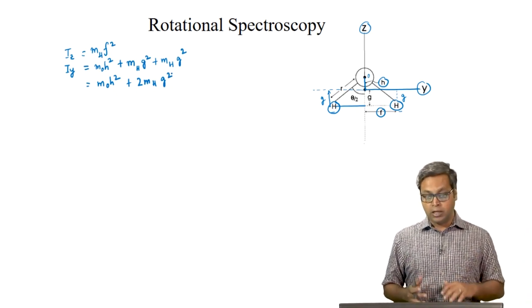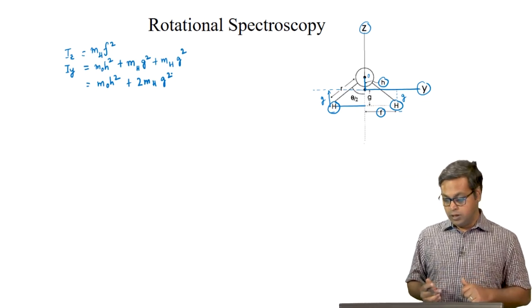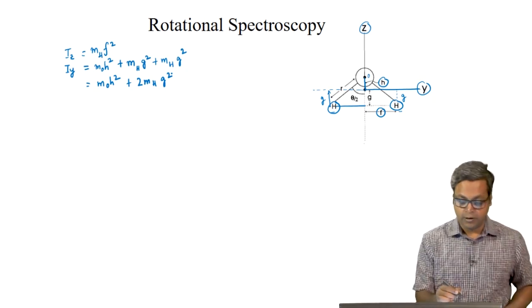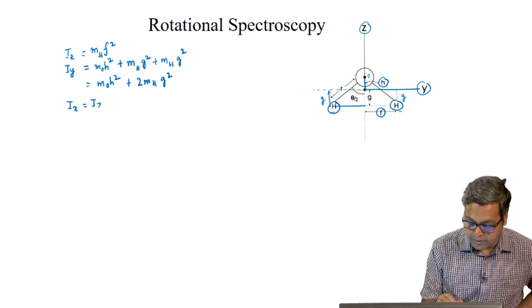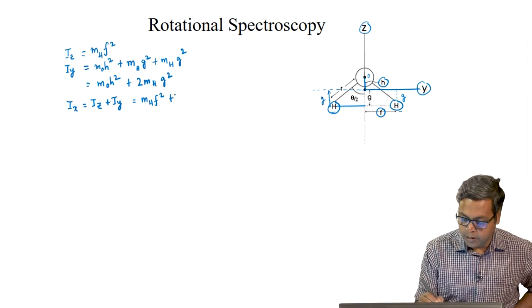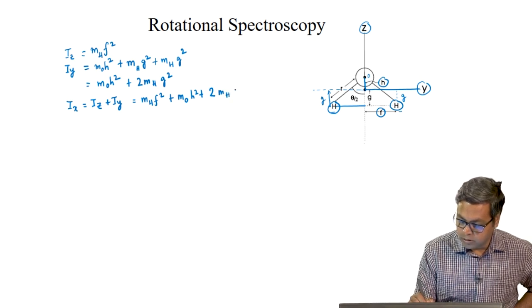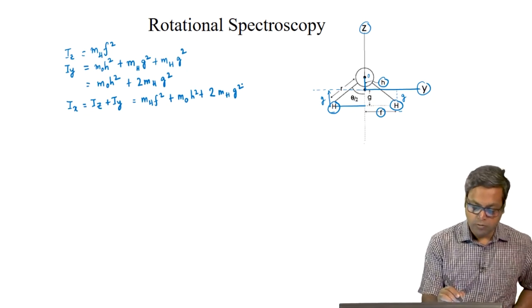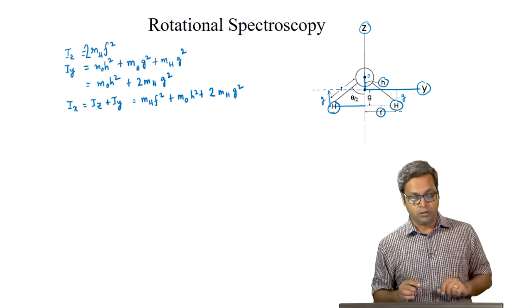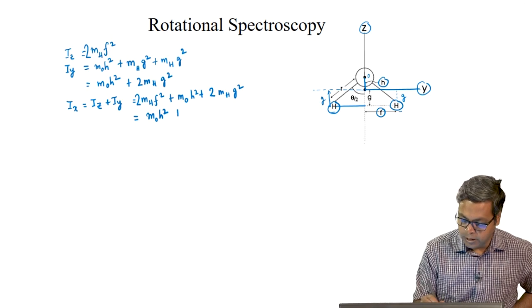For any planar molecule, the out-of-plane moment of inertia is equal to the sum of the two in-plane moments of inertia. Because the out-of-plane moment of inertia here is IX, we can write IX equals IZ plus IY. So IX equals M_H F squared plus M_oxygen H squared plus 2 M_hydrogen G squared. Note: in IZ I made a mistake — it should be 2 times mass of hydrogen because there are 2 hydrogen atoms. So what we have is M_oxygen H squared plus 2 M_H (F squared plus G squared).